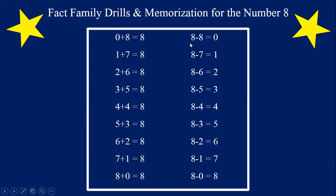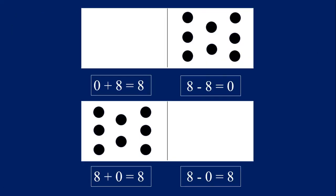Now let's try the subtraction. Eight minus eight equals zero. Eight minus seven equals one. Eight minus six equals two. Eight minus five equals three. Eight minus four equals four. Eight minus three equals five. Eight minus two equals six. Eight minus one equals seven. And eight minus zero equals eight. Now we're going to use dot cards to help us learn the fact families for the number eight.